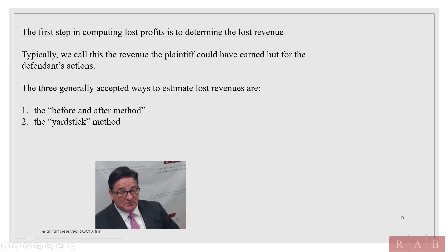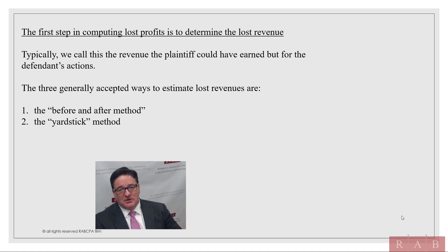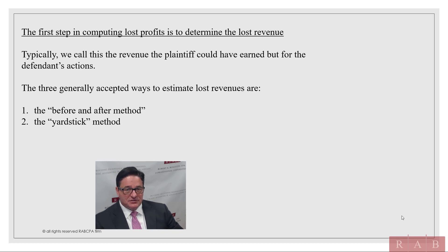The other method is the yardstick method, which uses ratios and comparisons. This is typically done when you have a startup company with no sales history. We have companies call us that never had a sale and were put out of business — someone reneged or stole their code and they never opened their store. This happens a lot in software. So they never had sales, but you can still calculate damages based on what other comparable companies did using the yardstick method. These methods are accepted throughout the country in all courts.